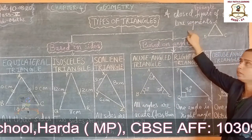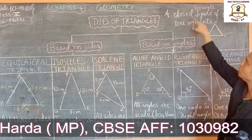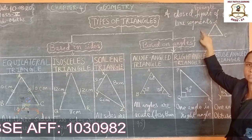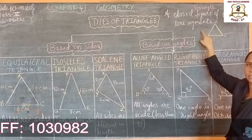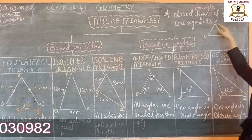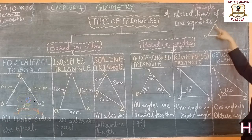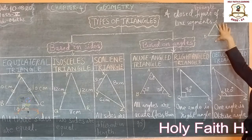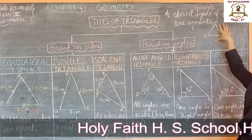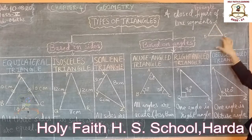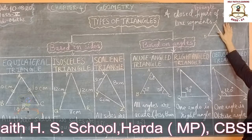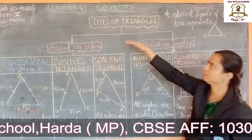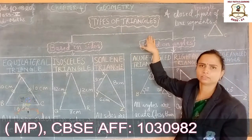Look at here students. A triangle is a closed figure of three line segments. You see here, this is a closed figure, it is made up of three line segments. So we call it a triangle. Understood? Now we will see types of triangles.